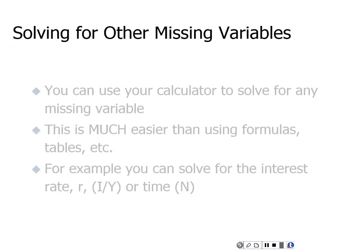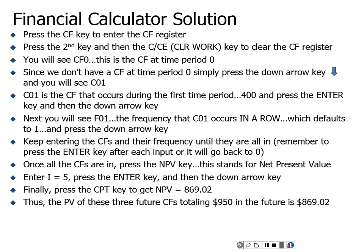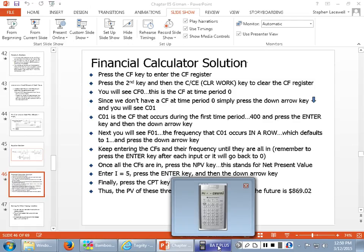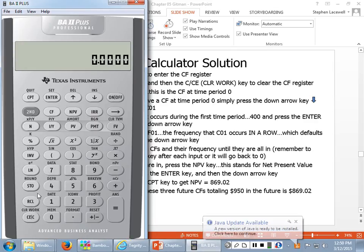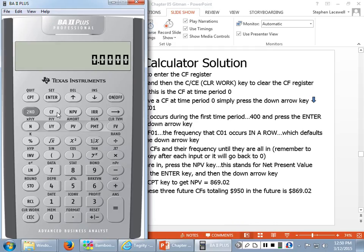I'm going to take you through this using the financial calculator. Out of habit, once I've cleared the zeros, I go through Second, Clear Time Value of Money, Second, Clear Work. To do the present value of a mixed stream, I'm going to use my cash flow register — the CF key. If I press the CF key, it may pop up showing CF0 equals zero, or it may show old data like mine does with negative 42,000. So I'll press the Second key and then the Clear Work key in the bottom left-hand corner to get rid of any old cash flows.